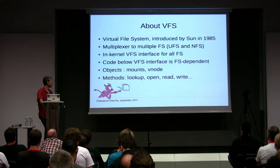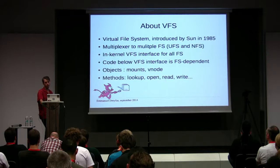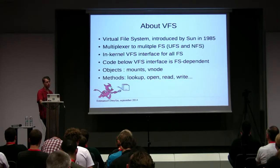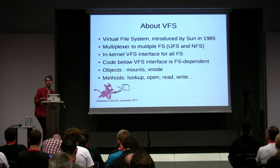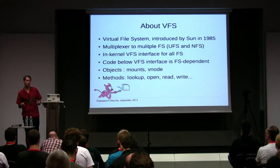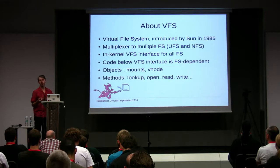The VFS was introduced by Sun a long time ago. At that time the idea was to have the ability to use both UFS and NFS. Think of it as a standard interface inside the kernel to reach any file system. Below that interface, each file system implements methods. For the VFS you have objects like mounts and vnodes — vnodes represent files or directories — and methods like lookup to find a vnode, open, read, and write.